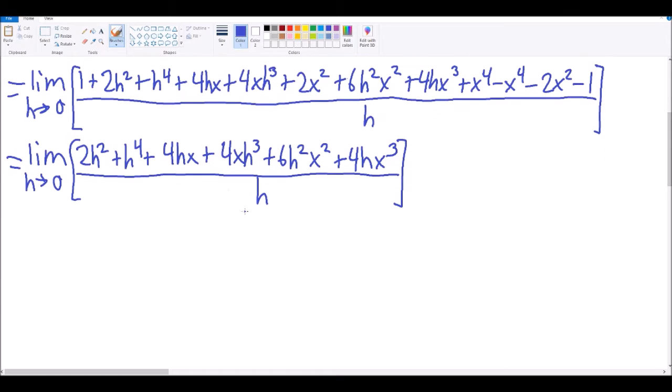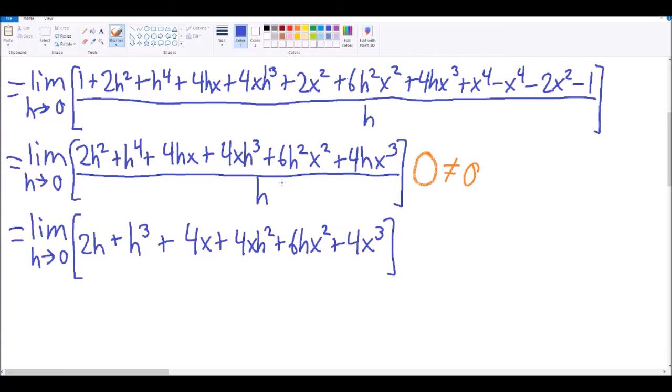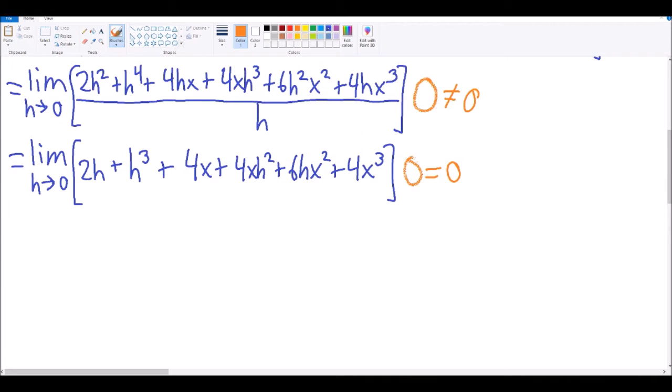And since this is a limit, we now use convenience to say that approaching 0 is not the same as equaling 0, which lets us divide by h without breaking math. And now we use convenience of limits again to now say approaching is the same as equaling, and we solve our limit.